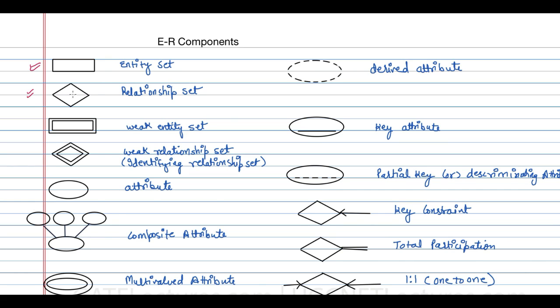If we have a weak entity, weak entity can be represented by a rectangle inside a rectangle and a weak relationship set can be represented by a diamond inside a diamond.